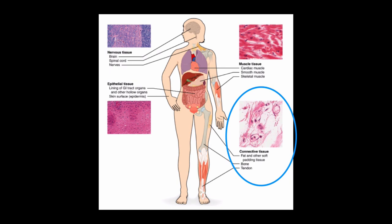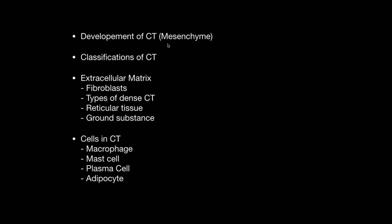I'm going to start with the development of connective tissue — CT stands for connective tissue. I'm going to mention the mesenchyme and talk about the classification of connective tissue, then cover the extracellular matrix, which includes fibroblasts, types of dense connective tissue, reticular tissue, and ground substance. I'll also talk about the cells in connective tissue: the macrophage, mast cell, plasma cell, and the two types of adipocytes.